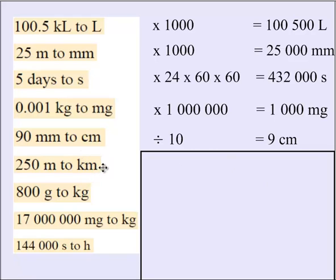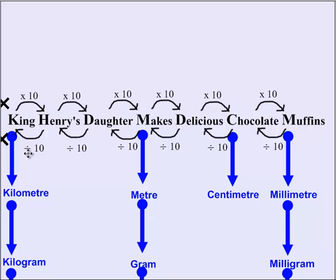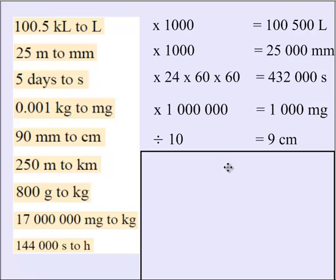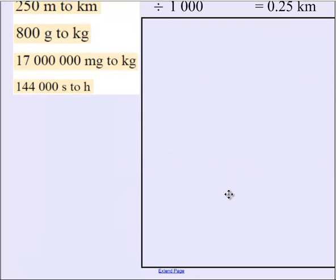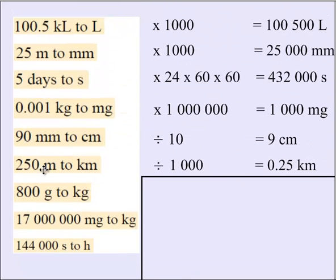Okay, 2,250 meters to kilometers, we use King Henry. So meters is here, and we're going to kilometers. So it's time to divide one ten, two ten, three ten. So there's three words in there. So we need to divide by 1,000, which ends up giving us 0.25 kilometers. The decimal point is currently here next to the zero. Dividing by 1,000 means we're going to go back one, two, three times, putting it in front of the two.